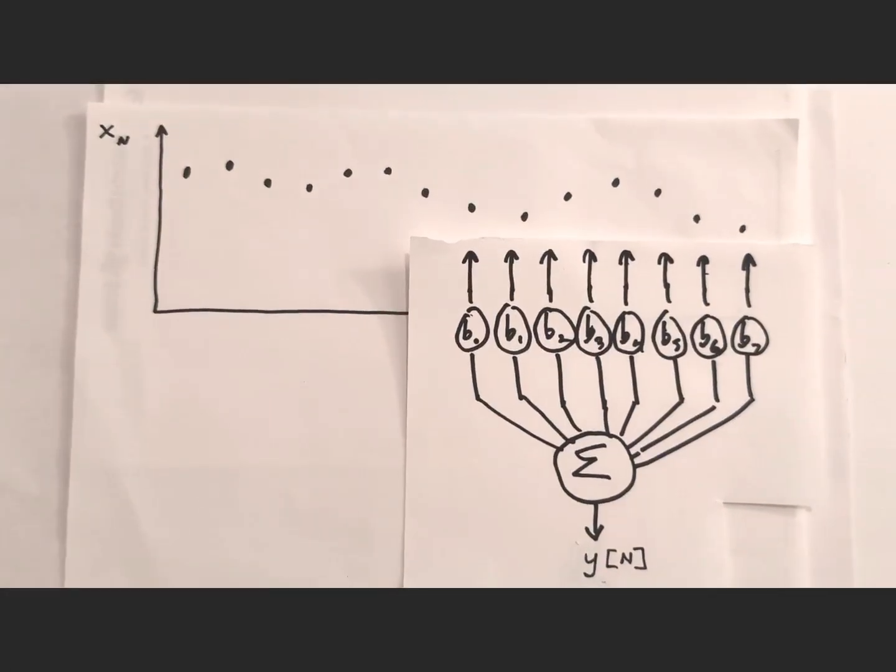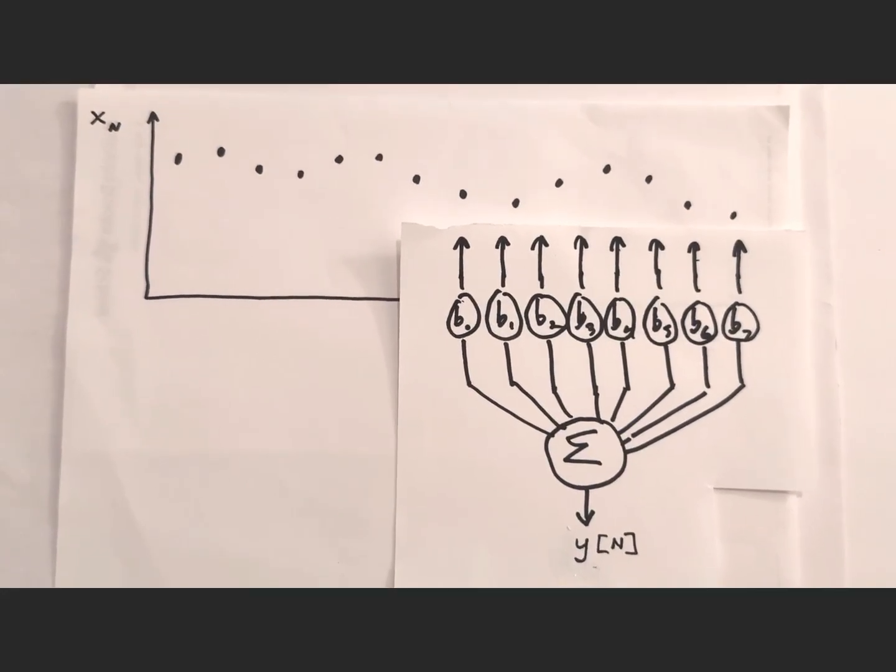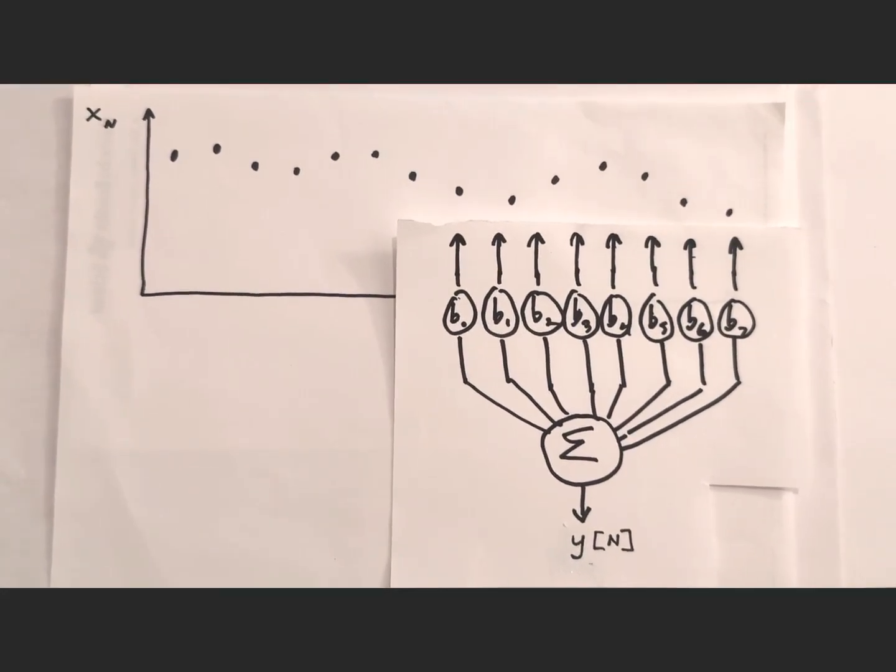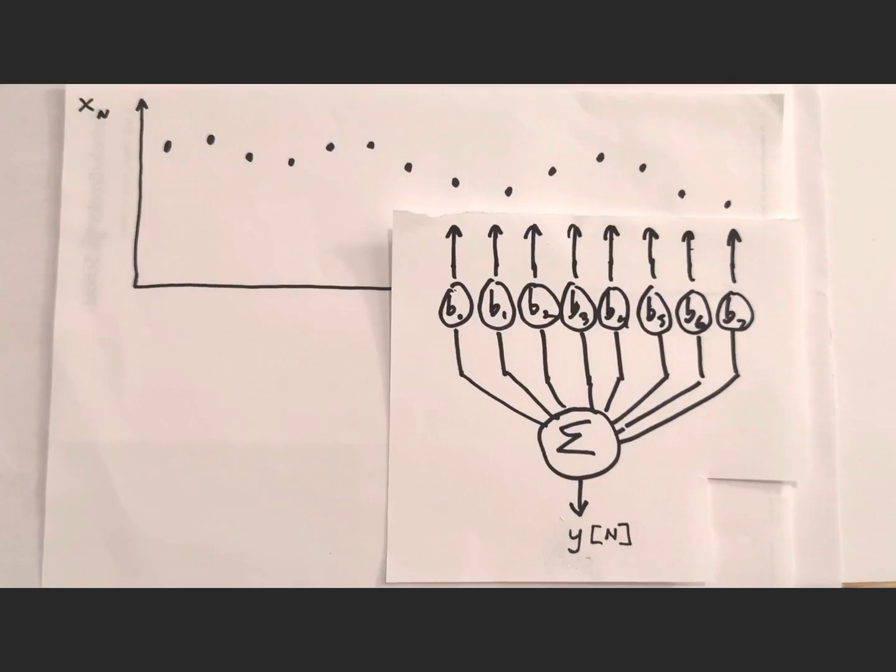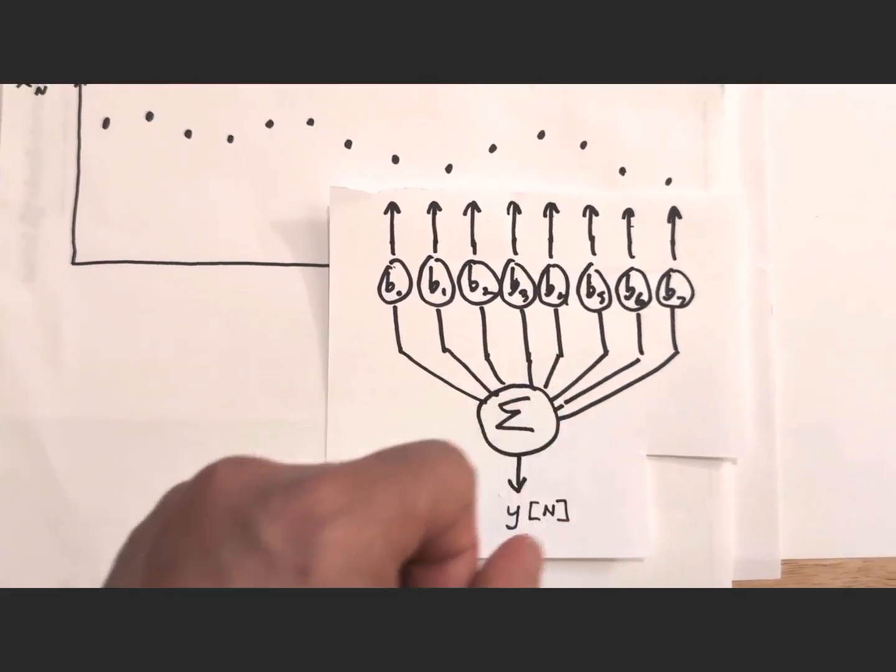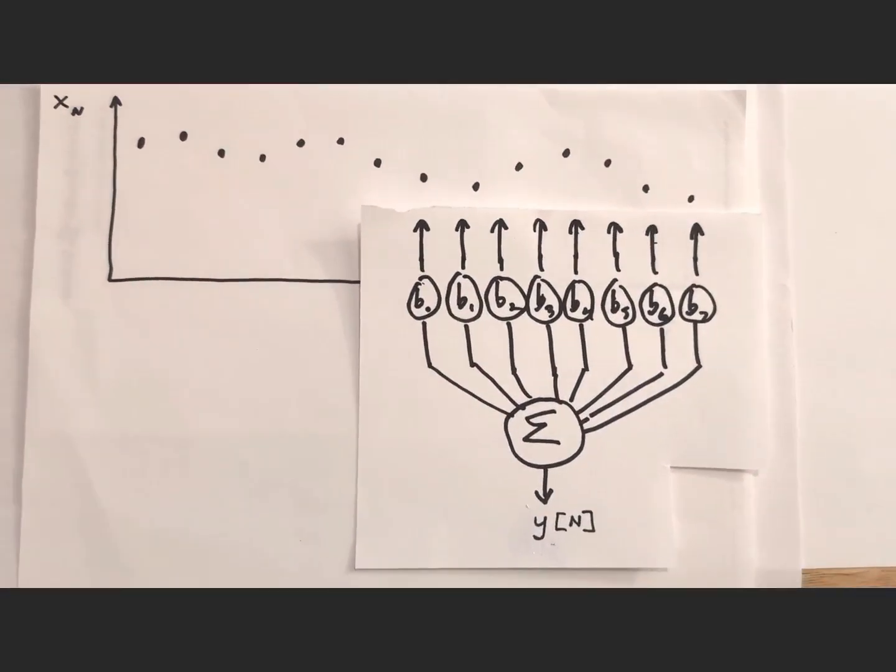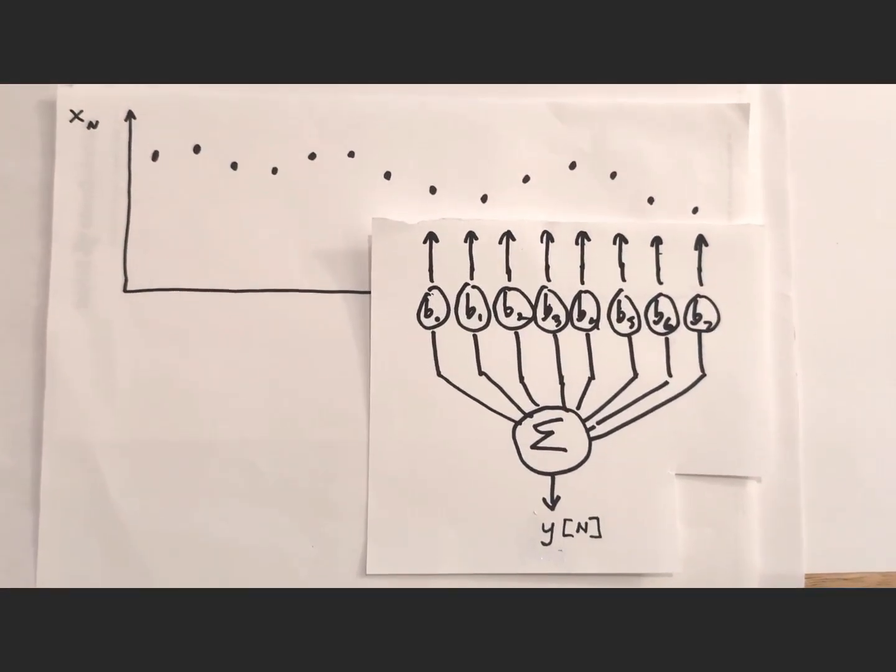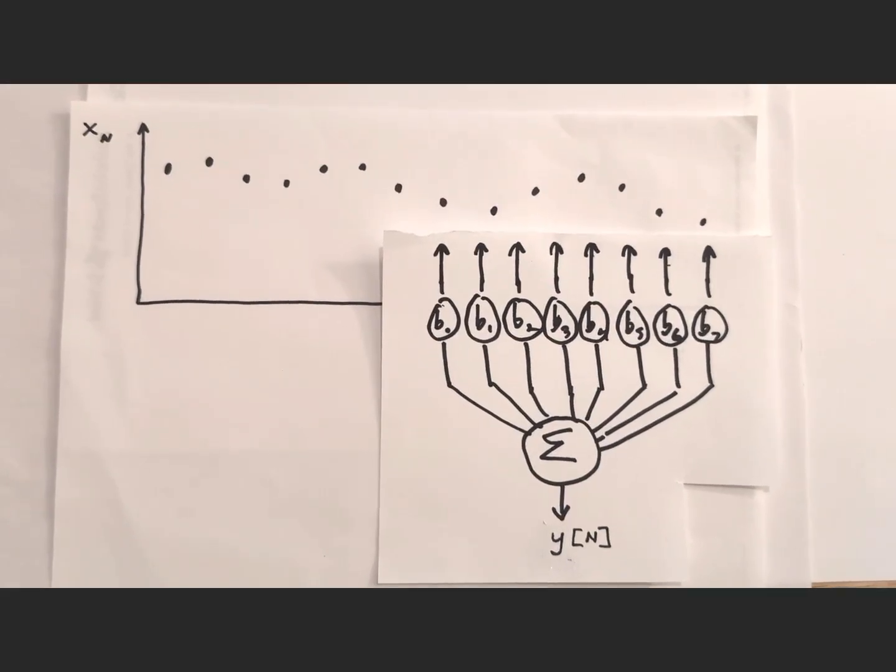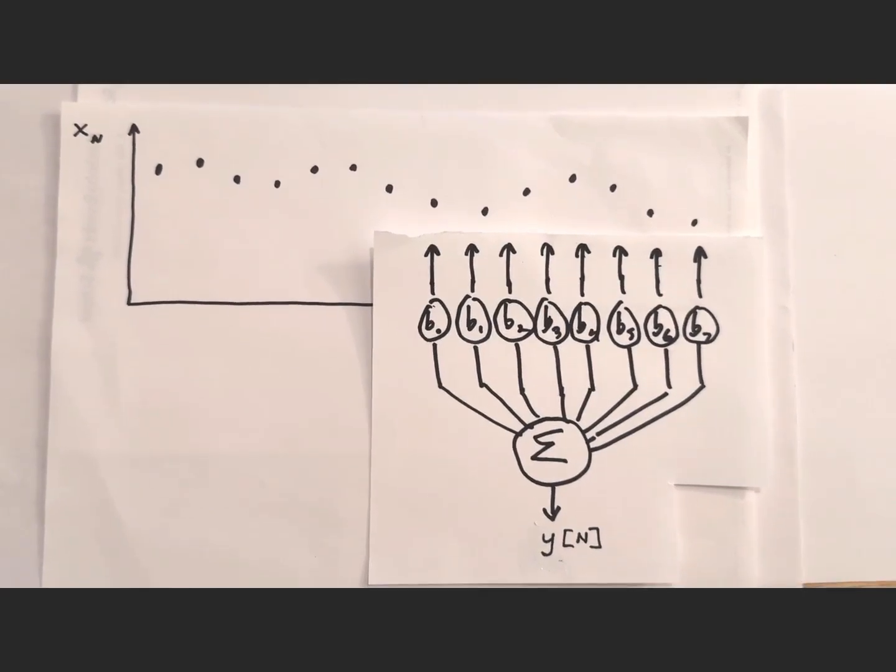So as you can see, the FIR filter is actually quite simple in principle. It's also pretty easy to code. The only challenge that really remains is to solve for these coefficients, B sub n, and figure out also how many taps you need, depending on the filter that you want to build. There are various ways to calculate that by hand. But probably the simplest is just to use one of the online tools, which I'll show you next.